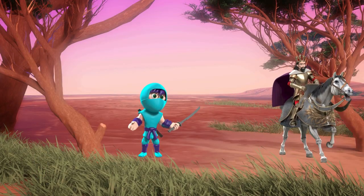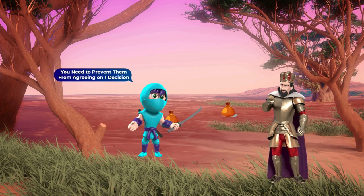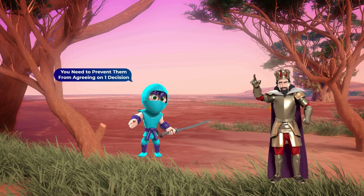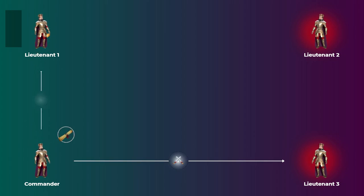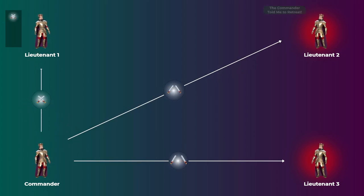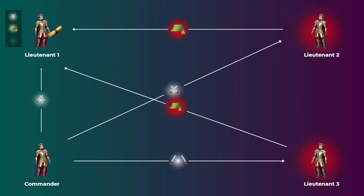But what if there were two traitors? For example, lieutenant three was also bribed along with lieutenant two. In this situation, the two traitors will try and prevent the loyal commander and the loyal lieutenant one from reaching agreement on one decision. So for example, if the commander issued an order to attack and sent three attack orders to the three lieutenants, the two traitor lieutenants will try to confuse the loyal lieutenant one by sending messages saying that the commander told them to retreat.